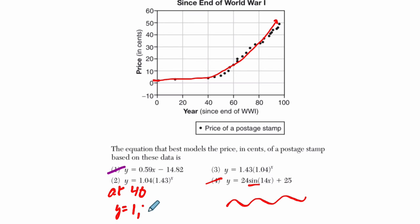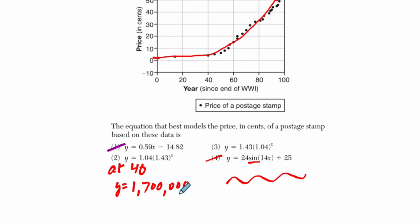That's not at all close. What would that be in dollars divided by 100? You get $17,000 for a stamp. Does that seem reasonable? No. And that doesn't fit the model at all here, the graph. You could plug in 60 or 80. You would see even more dramatic differences.